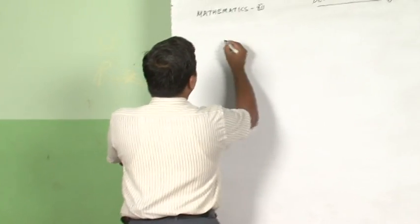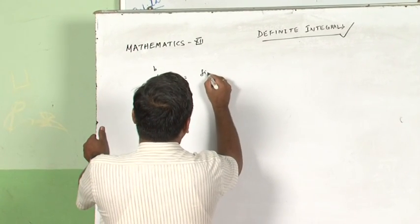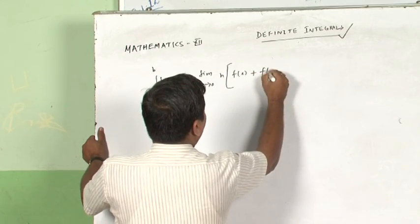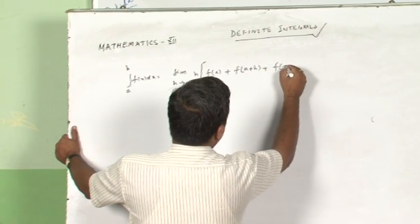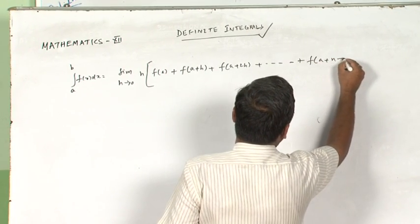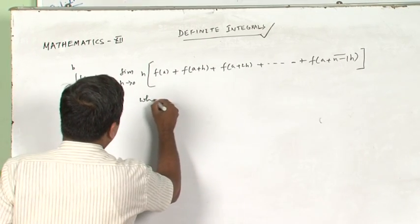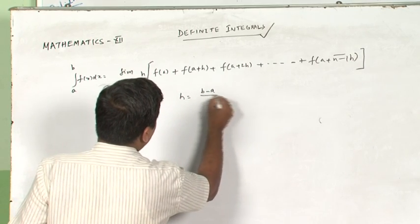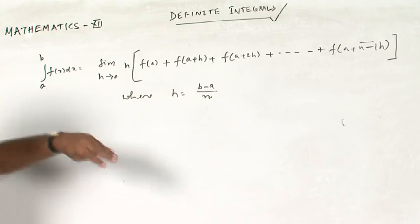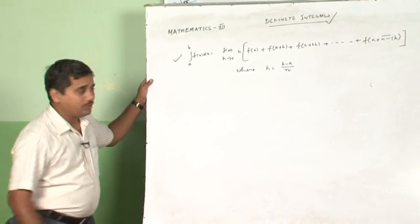Well, what is limit of a sum? Integration a to b f of x dx is equal to limit h tends to 0 h into f of a plus f of a plus h plus f of a plus 2 h and so on so forth f of a plus n minus 1 into h. This is a value where h is equal to b minus a upon n. Your textbook formula might differ to the formula which I have written because one thing I would like to tell you, this is much easier technique as compared to the textbook technique that is given to you.